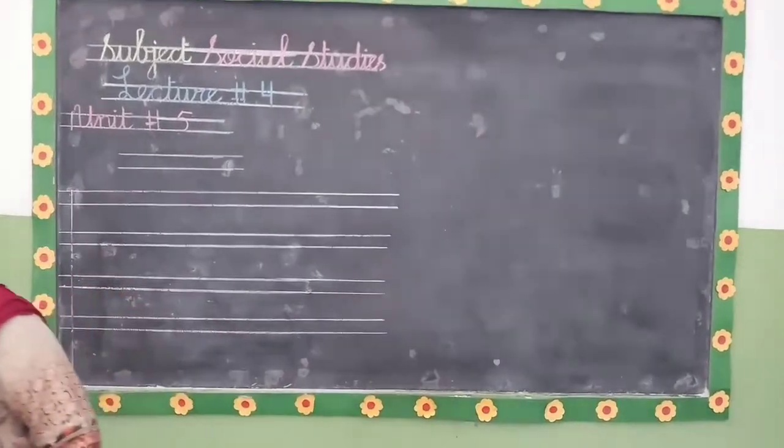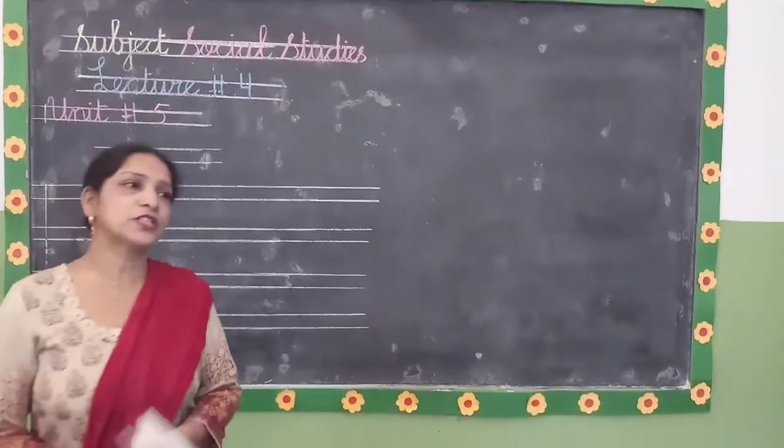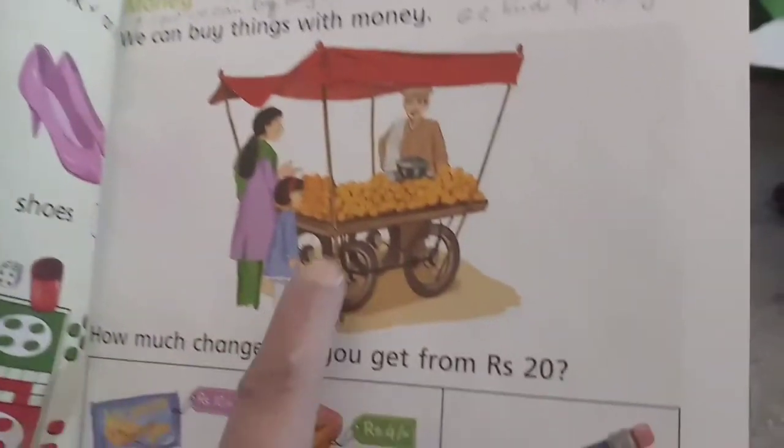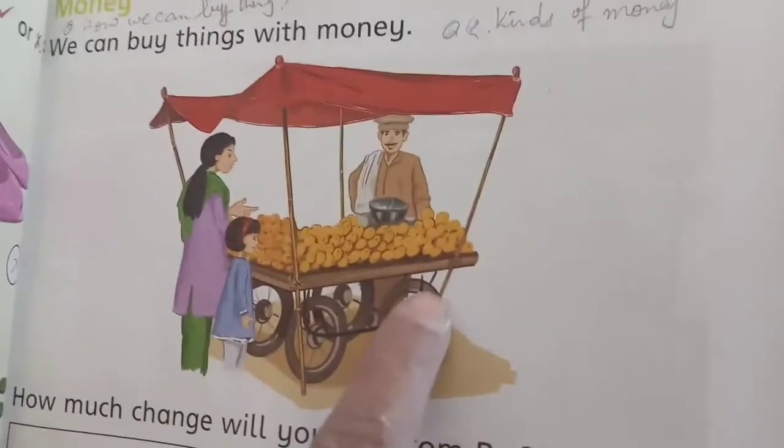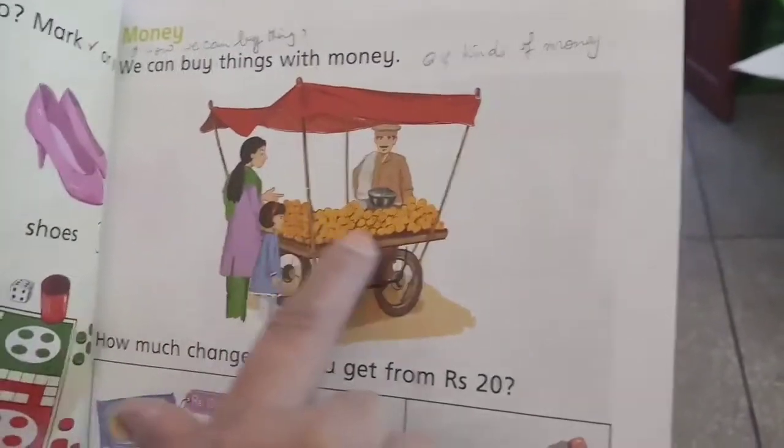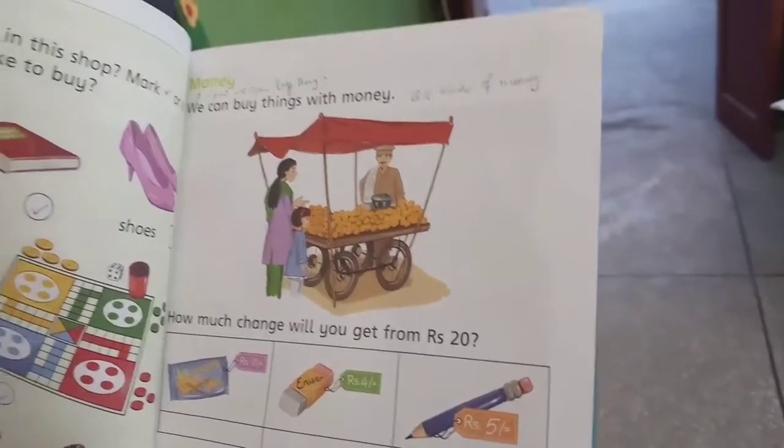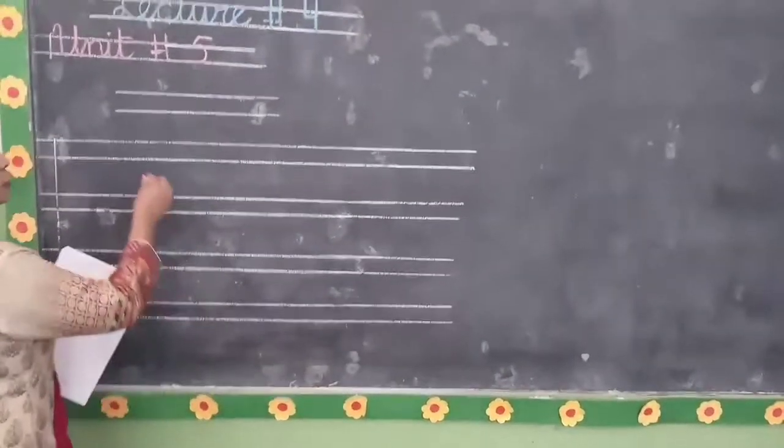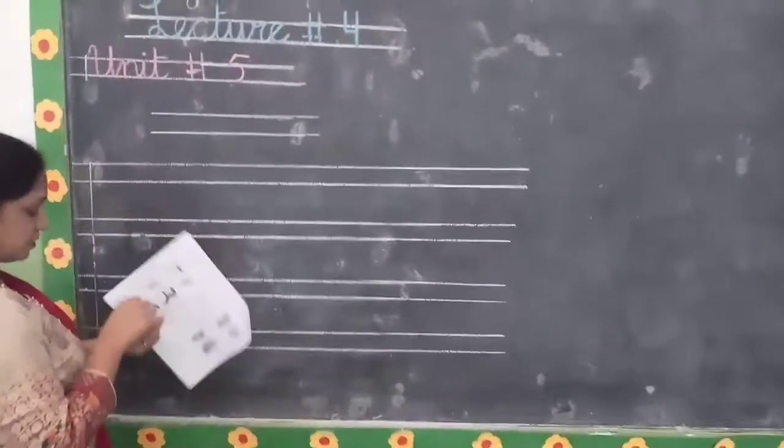Today's lesson, we have a question. How can we buy things? This is a man who has a mango. There's a woman and a child. If you give money, then you will get a mango. Otherwise, you will not get mangoes. The topic of our lesson is money.